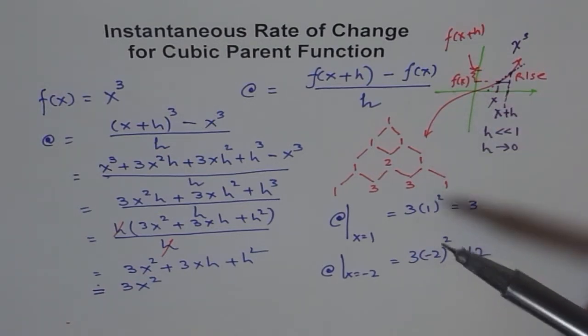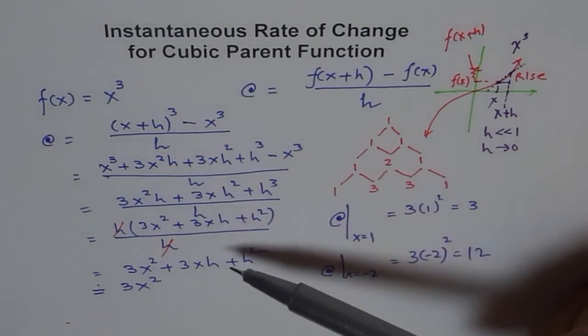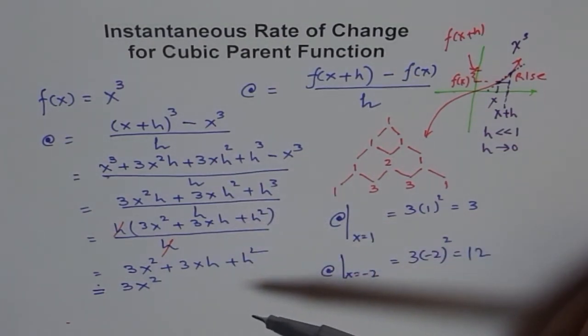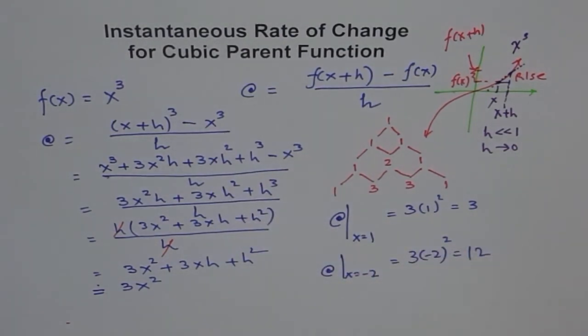I hope you understand the process. This is a very important method called the difference quotient method. We are going to use this for all our parent functions. Look for examples on square function, square root function, and reciprocal function. Those will help you solve any problem on instantaneous rate of change. Please put your comments and questions on the video. I will be glad to answer them. Thank you.